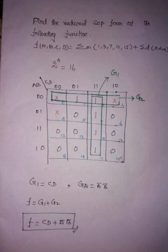The given problem is: find the reduced SOP form of the following function f(a, b, c, d) is equal to summation m of 1, 3, 7, 11, 15 plus summation d of 0, 2, 4.